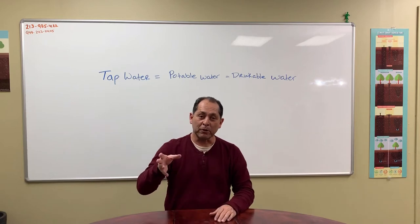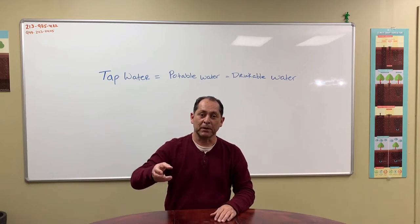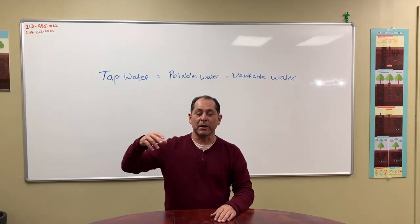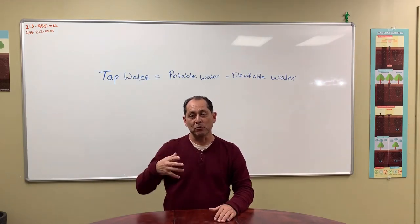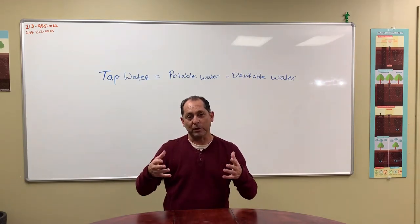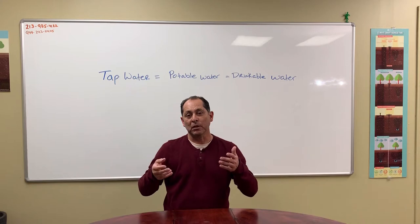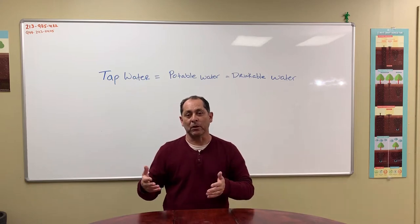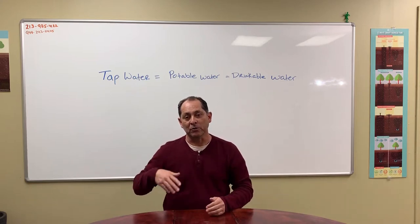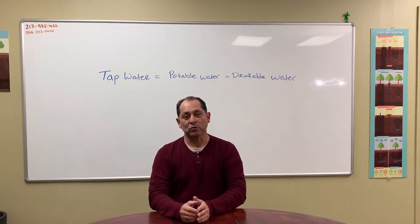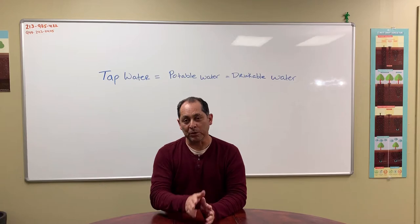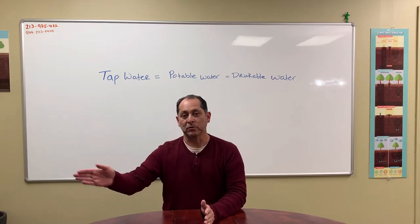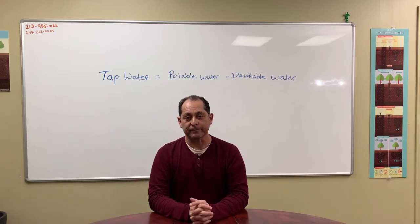Gray water, on the other hand, is water that has been used. It's tap water that's been used when you take a shower or use it for the laundry, and it goes out towards the sewer, but we divert it to the landscape.